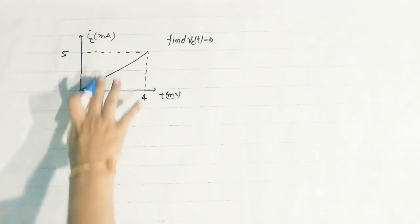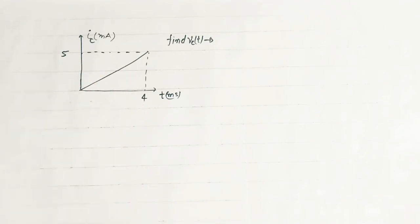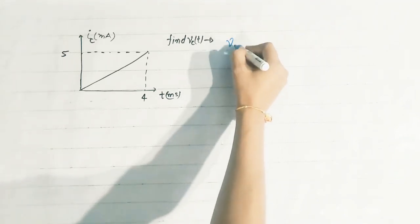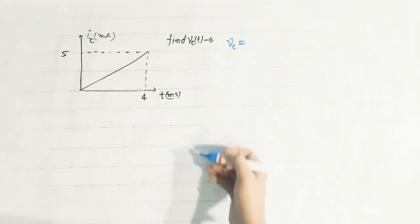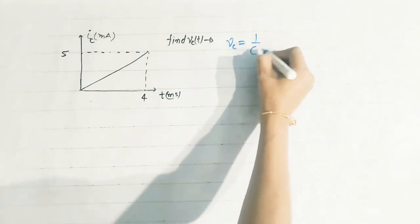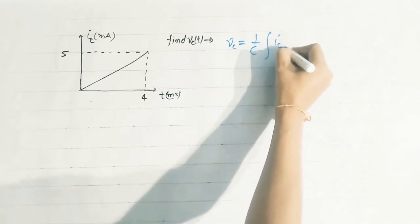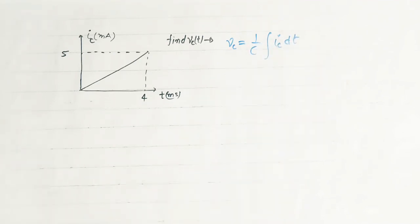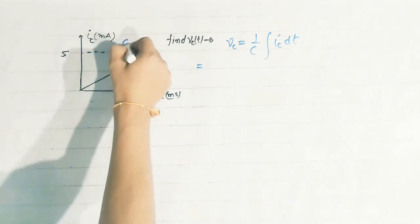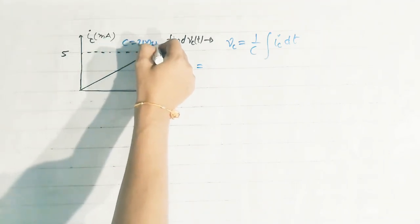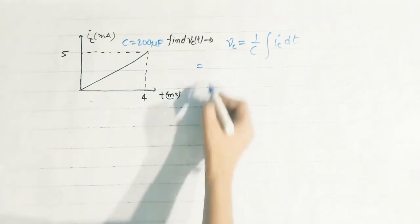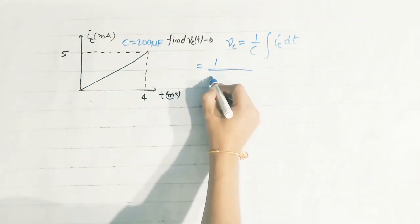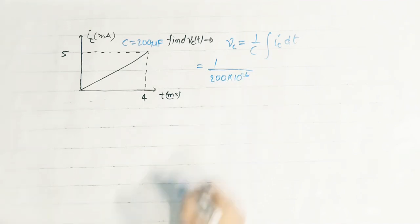First of all, we know that the integration of a ramp function is a parabolic (exponential) function. We can write capacitor voltage Vc equals one upon C times the integration of ic dt. The value of the capacitor here is 200 microfarad, so C equals 200 into 10 to the power minus 6.